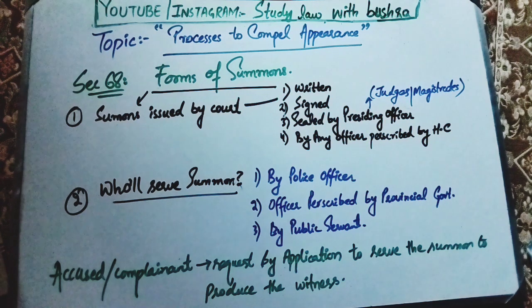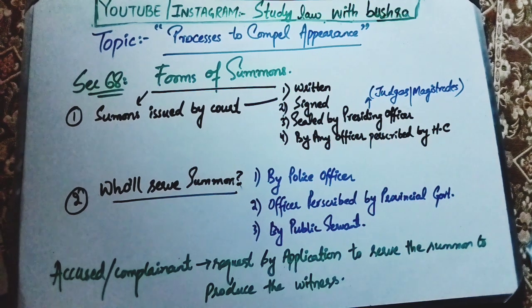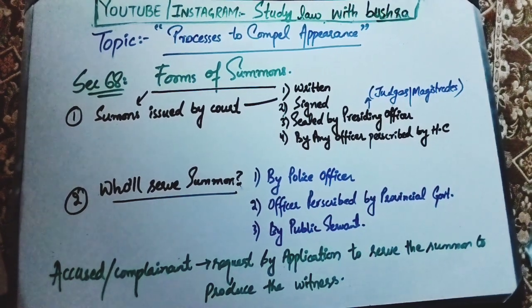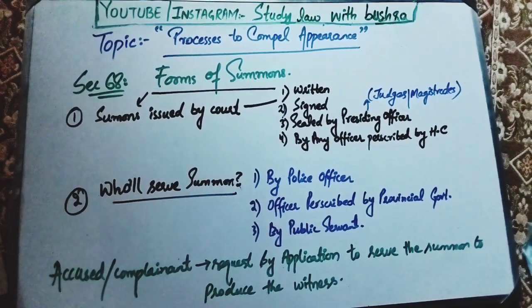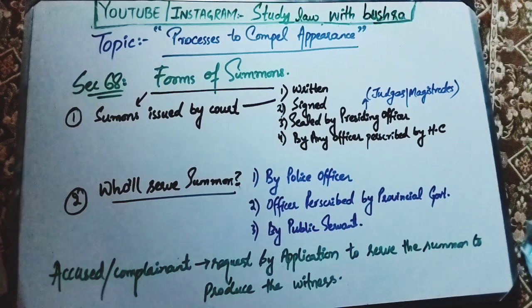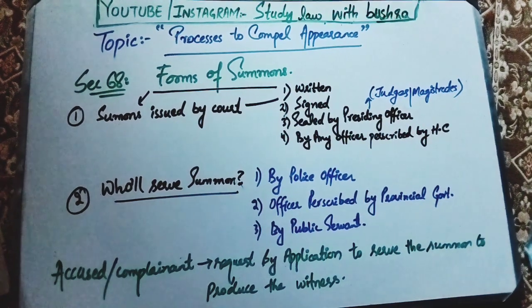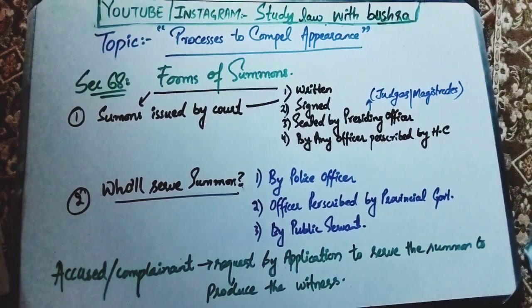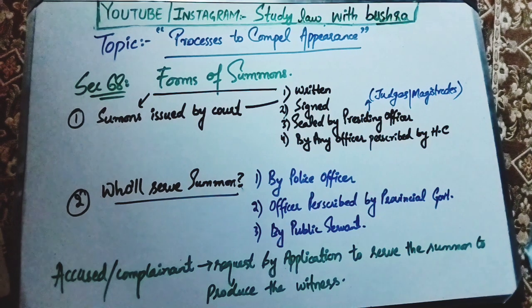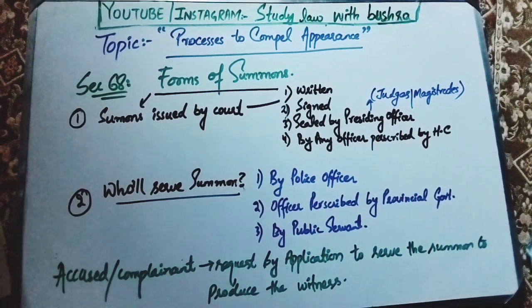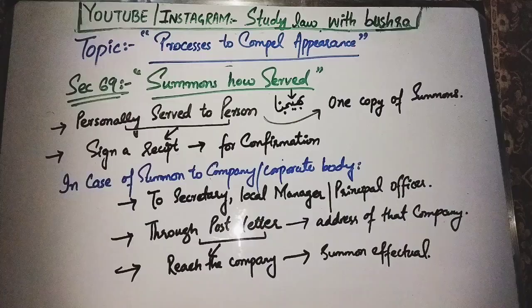A provision within Section 68 states: provided that the court may, at the request of the complainant or the accused, allow him to serve the summon on his own witness. Meaning, if an accused or complainant submits an application requesting a summon to produce their witness, the court can accept that application. Also within this section, it is stated that the wording of the summon must be clear and specific in terms of the time, place, date, and day of attendance.